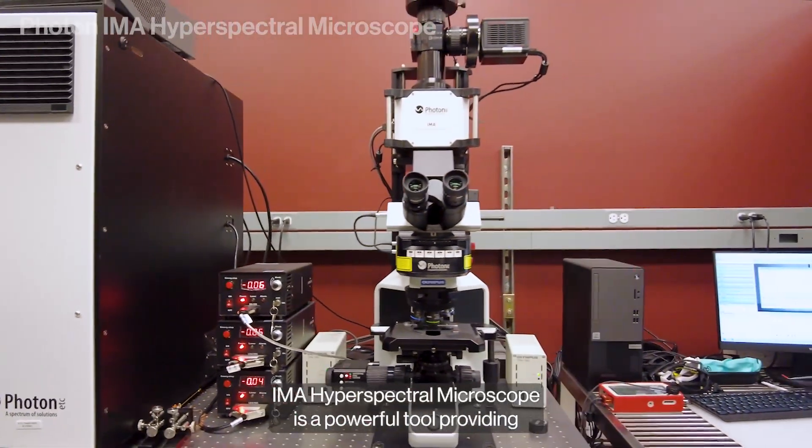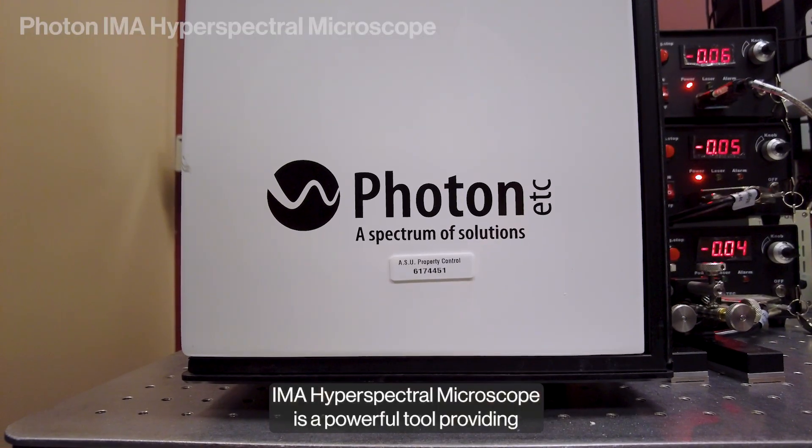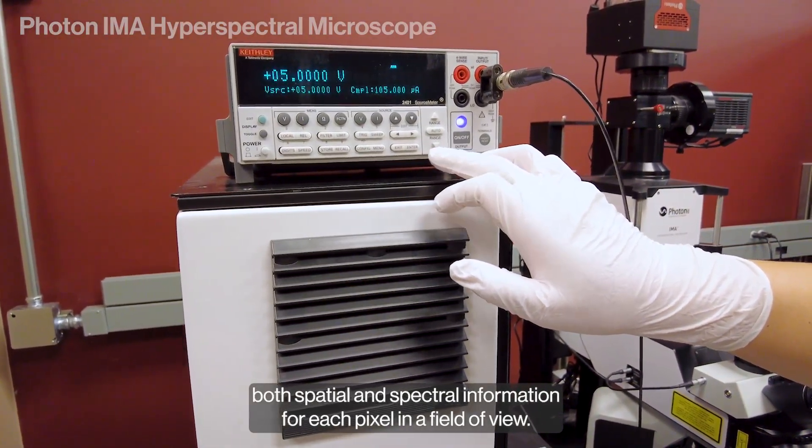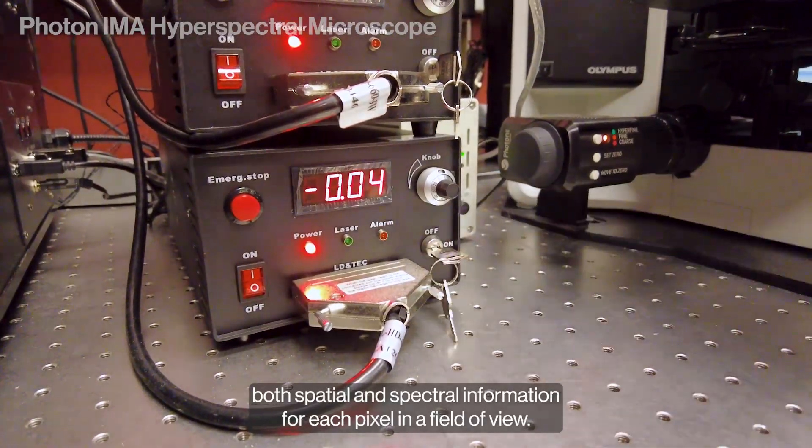The Photon IMA Hyperspectral Microscope is a powerful tool providing both spatial and spectral information for each pixel in a field of view.